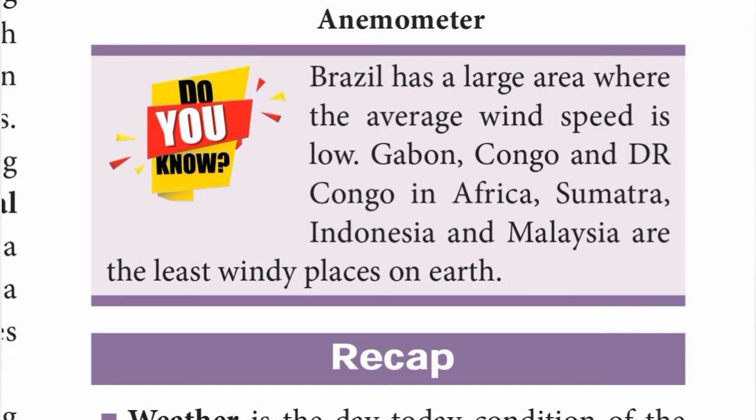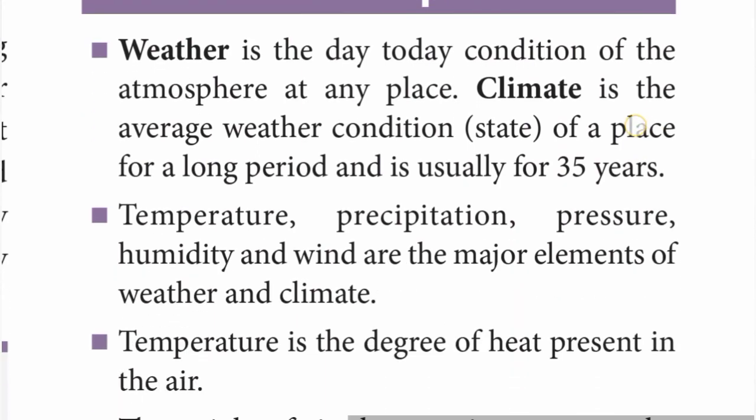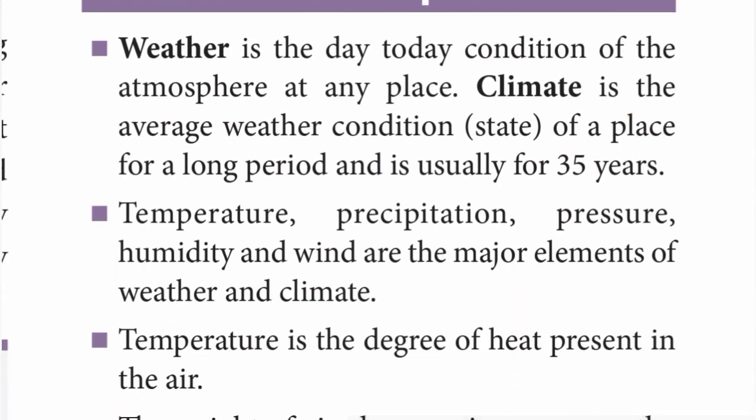Weather refers to the day-to-day condition of the atmosphere at any place. Climate is the average weather condition of a place for a long period, usually 35 years. Temperature, precipitation, pressure, humidity, and wind are all major elements of weather and climate.